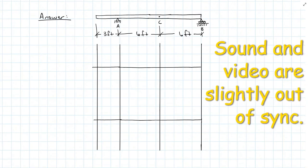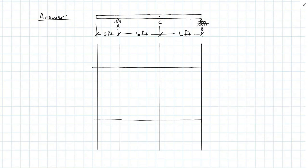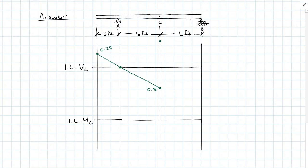If I were to plot my influence lines, I would see that I'd start at 0.25 because we had a positive shear influence. It comes down to zero when the unit load is at A, continues down to negative 0.5 when the influence load is just to the left of C. When it moves to just to the right of C, our influence jumps up to positive 0.5, where it then comes back down to zero when the load is over B. The moment, however, starts at negative 1.5, crosses zero at A, continues up to 3 at C, and then comes back down to zero at B.